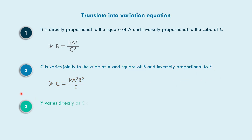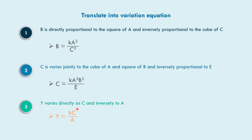In example number three, y varies directly as c and inversely as a. So, y is equal to k times c in the numerator, over a in the denominator.